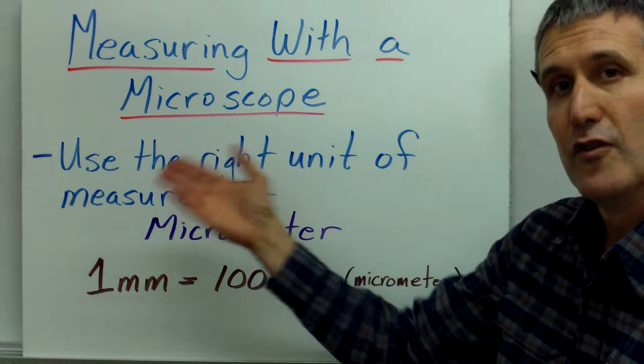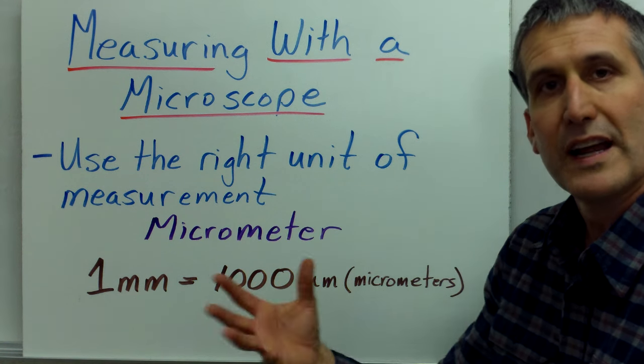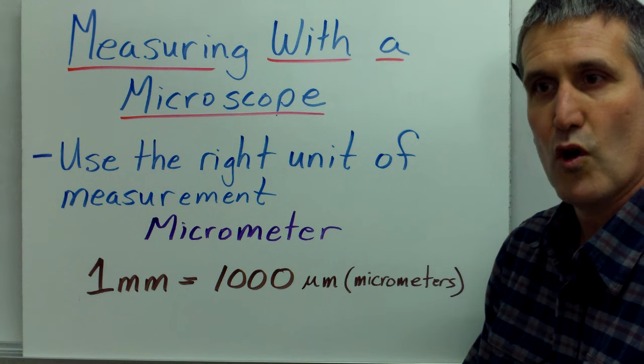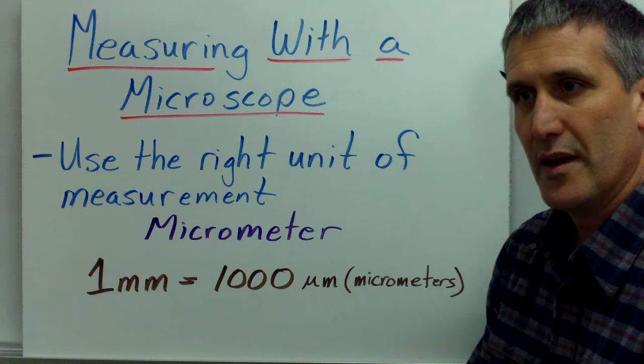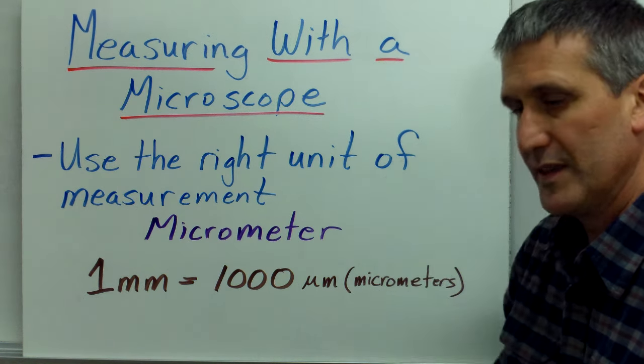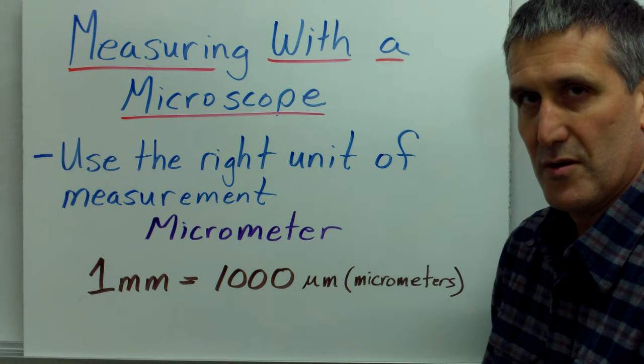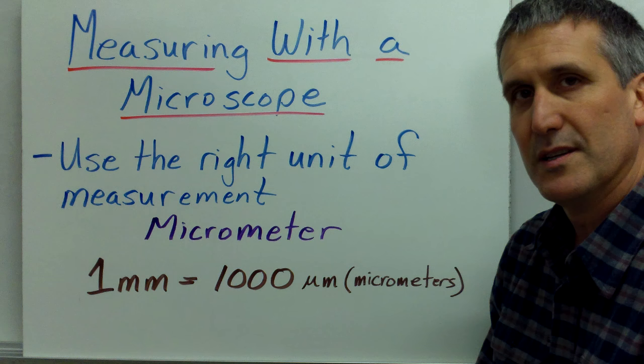Basically the first thing you have to think about is what unit of measurement am I going to use. Because you're looking at microscopic objects, millimeters, which we normally think of as a very small unit of measurement, is actually not small enough to take care of this situation. So there's a thing called a micrometer, which is one millimeter equals one thousand micrometers.